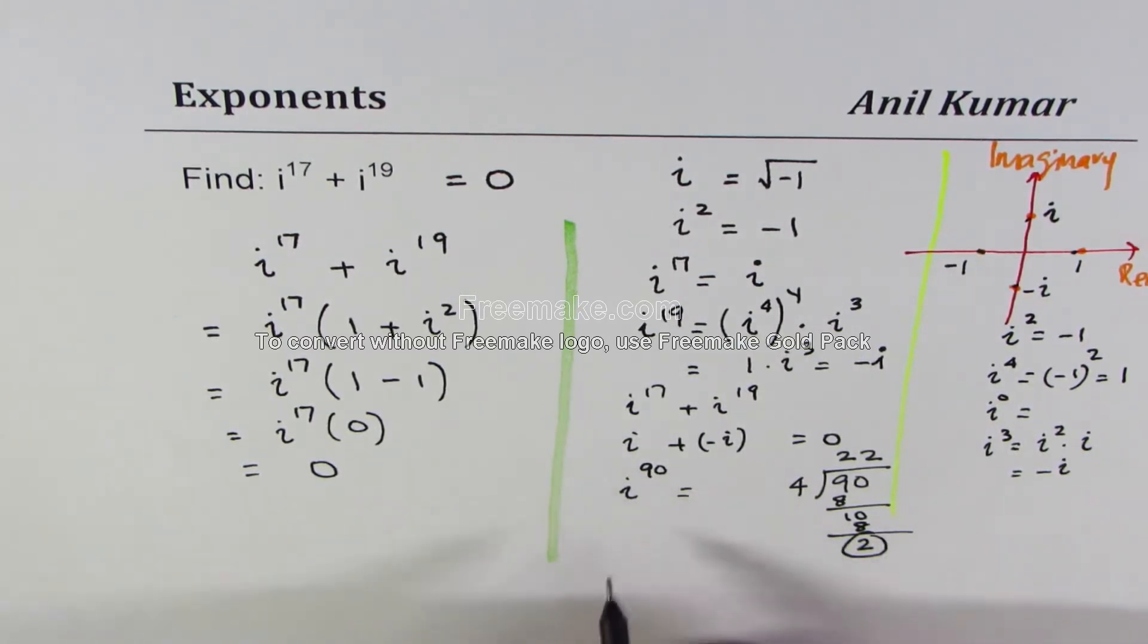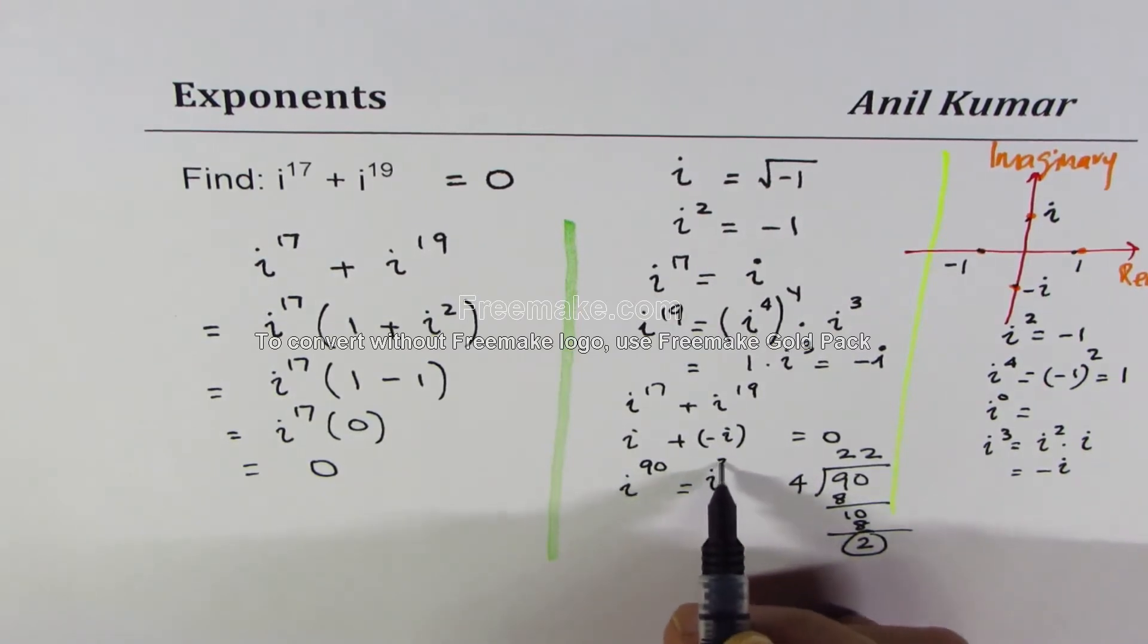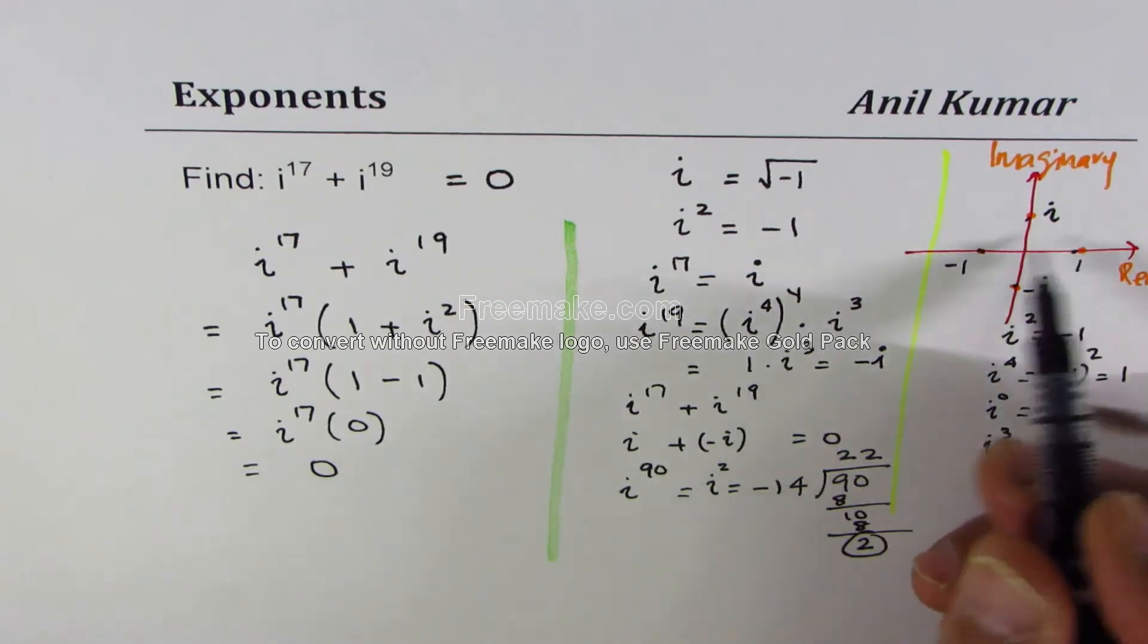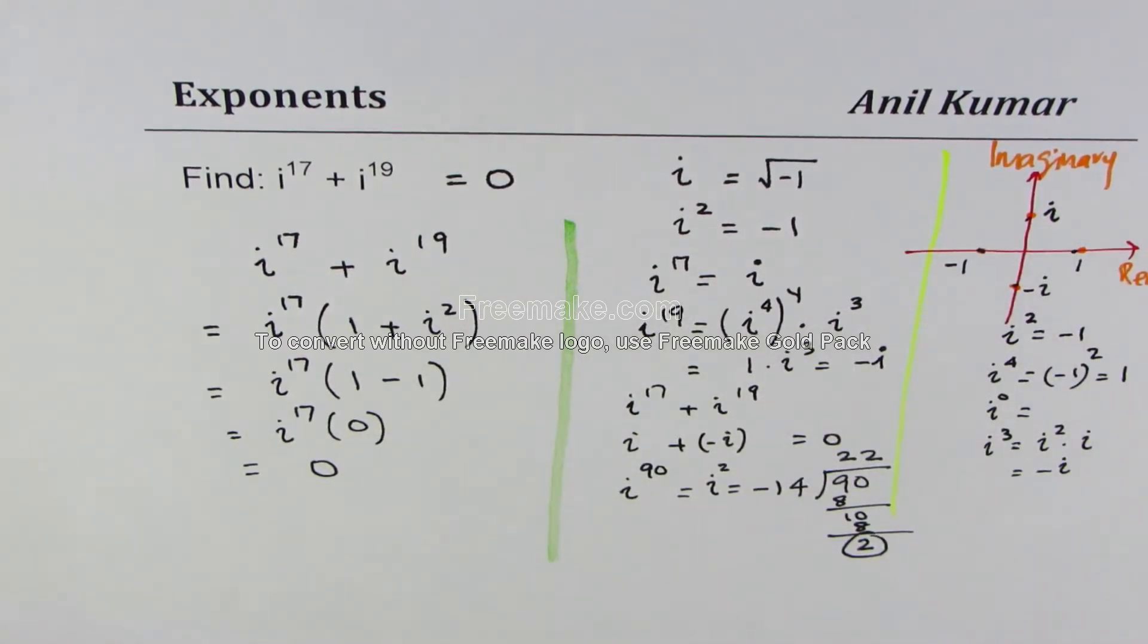This remainder of 2 tells us that i to the power of 90 is same as i square which is minus 1. So that is how this circle of 4 works. That is just an additional note.